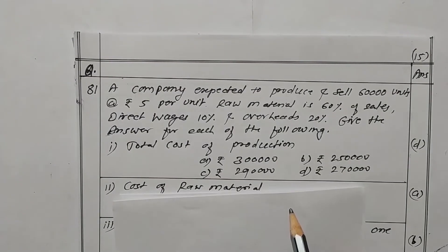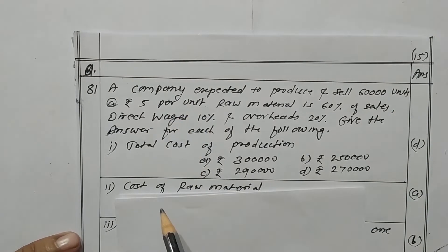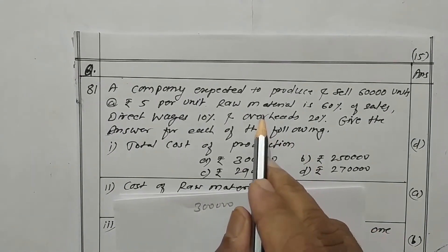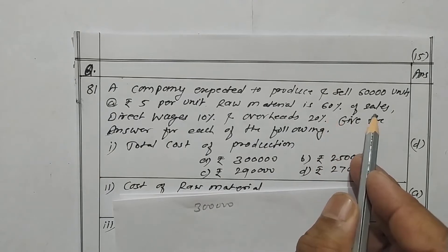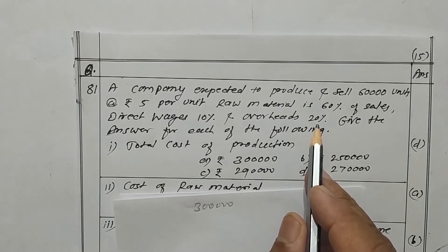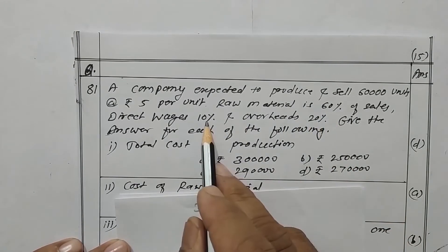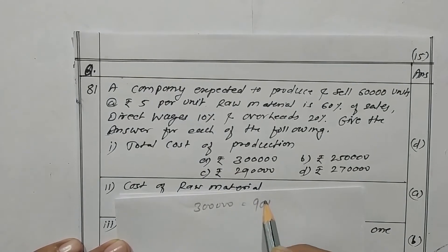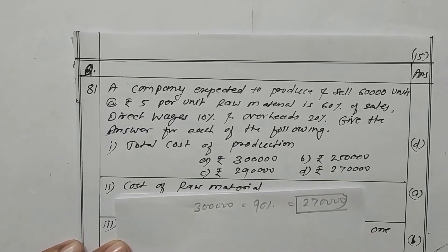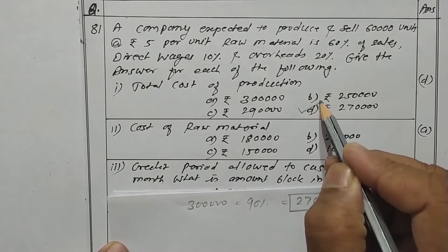Question 81. A company expects to produce and sell 60,000 units at rupees 5 per unit, giving total sales of rupees 3 lakhs. Raw material cost is 60 percent, direct wages 10 percent, and overheads 20 percent — so total cost percentage is 90 percent, meaning total cost is rupees 2,70,000. Total cost of production is rupees 2,70,000. Option D is the correct one.